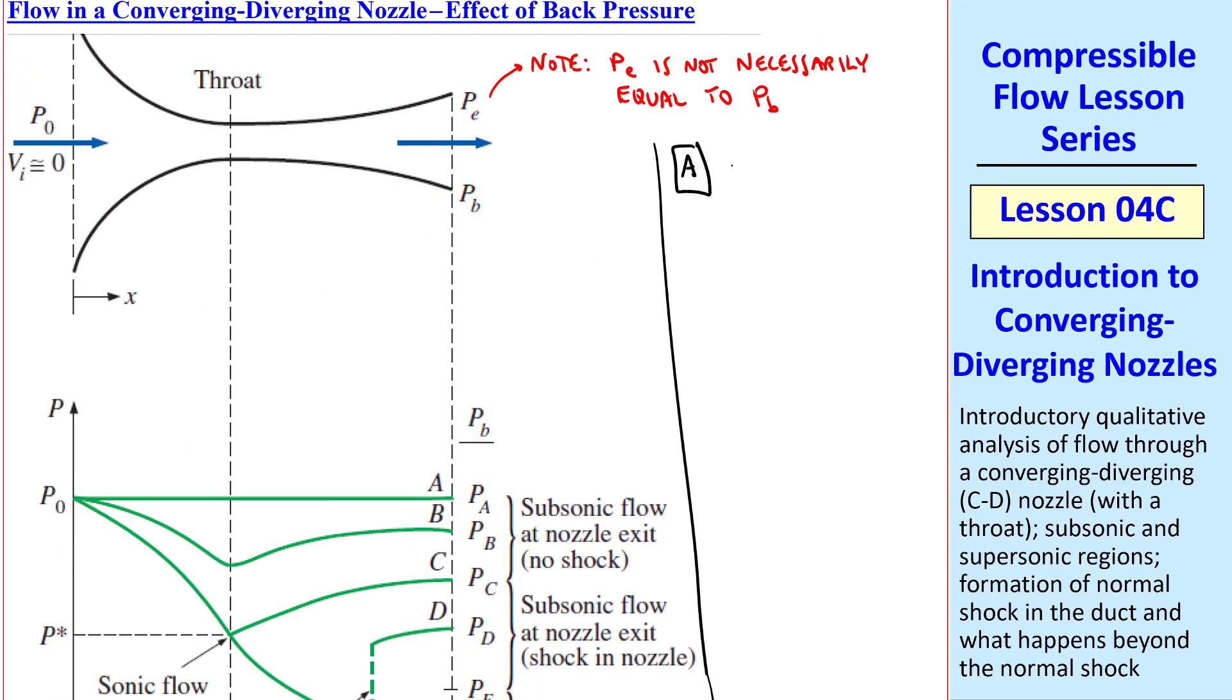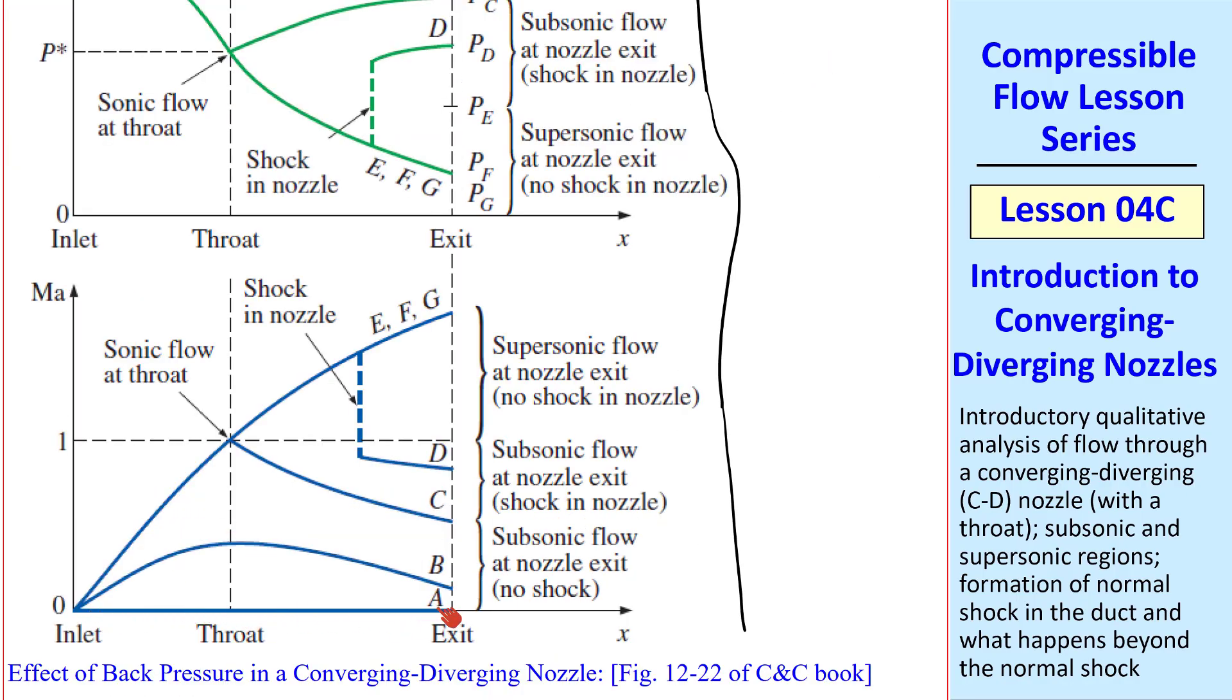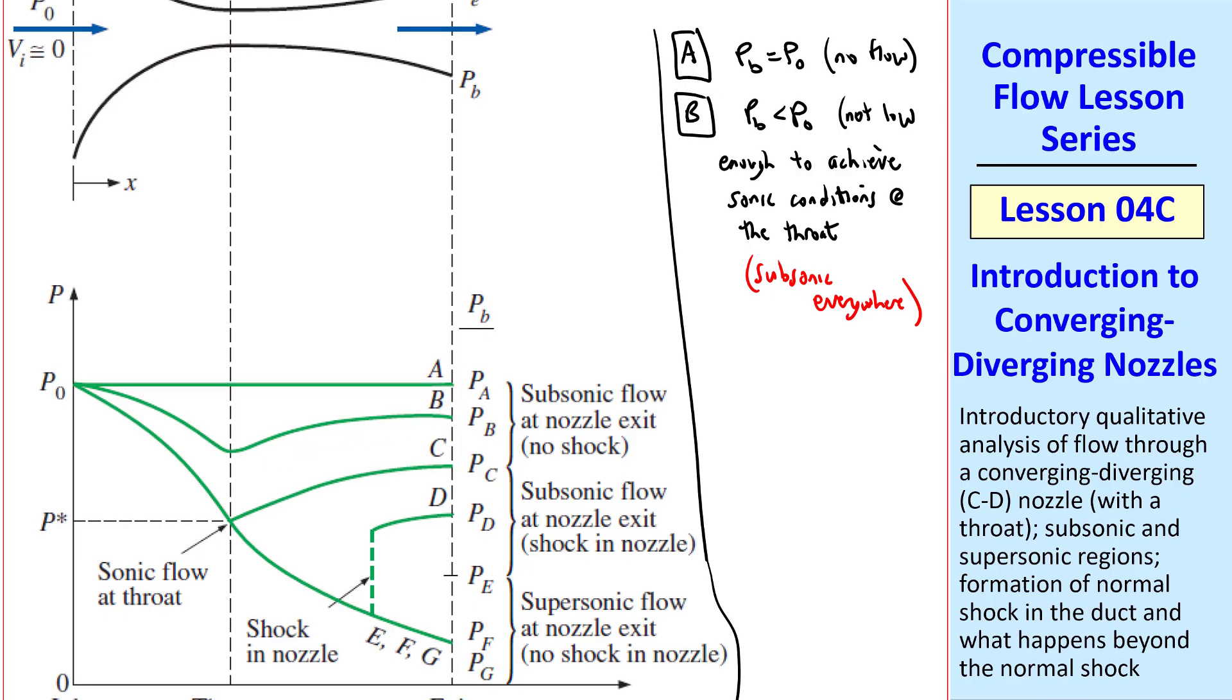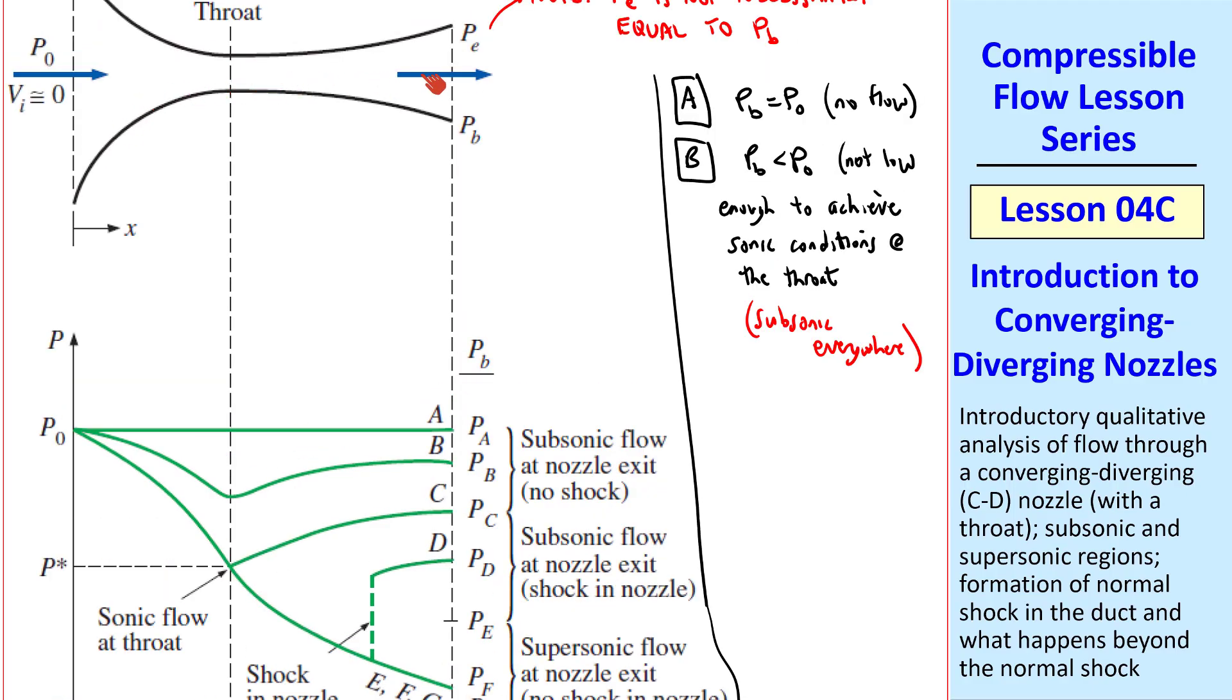First condition A is when Pb equals P0. That's the trivial case, and there's no flow. So P remains P0 throughout, and Mach number remains 0 throughout. Case B is when Pb is less than P0, but not low enough to achieve sonic conditions at the throat. This flow is subsonic everywhere. The pressure decreases, reaches a minimum at the throat, and then increases in the converging and diverging portions of the duct.